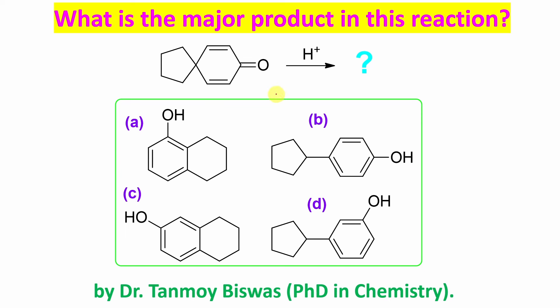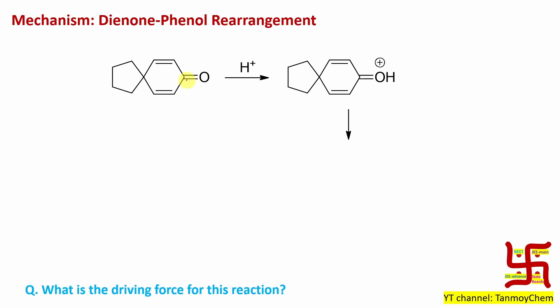Now what is the major product of this reaction? This is the molecule H-press. If you look at all the options, some rearrangement is happening. So this is actually a rearrangement reaction. And what is the name of this reaction? Dienonephenol rearrangement. Why? Because the product is a phenol derivative and the starting material is called dienone.